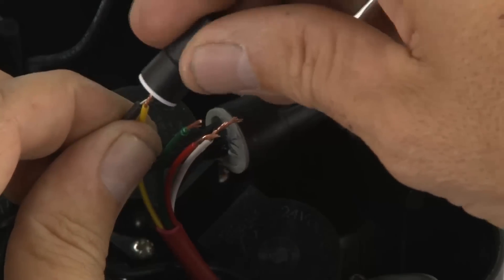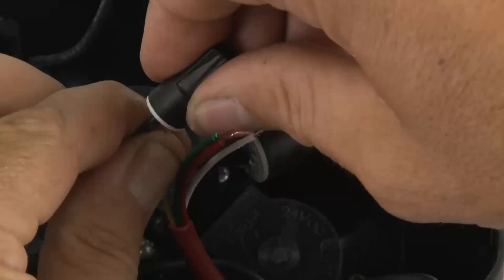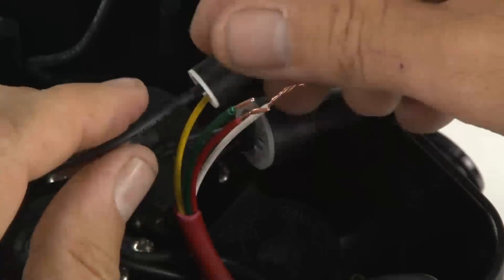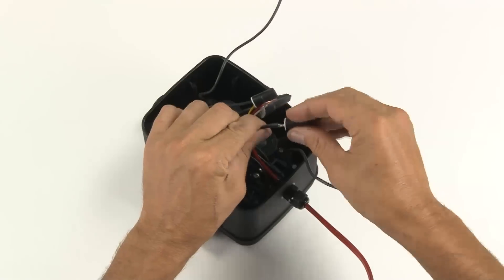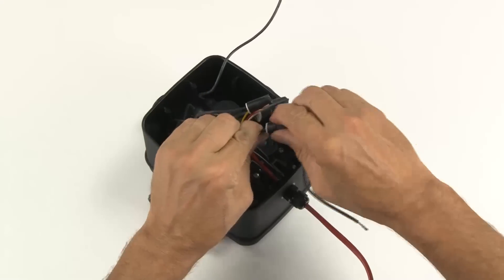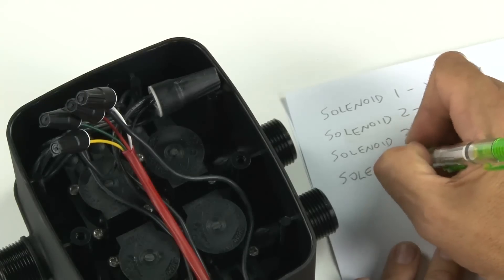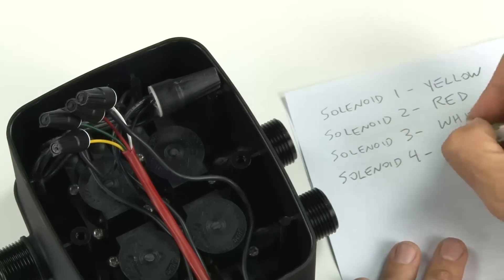Again, push the wires in, gently twist and push down. Repeat this process for the remaining valves. Write down the solenoid numbers 1 to 4 and note which coloured wire you connected for later reference.